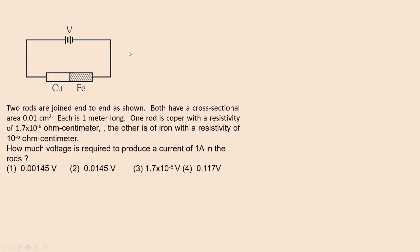So, what is the problem about? It says you have a voltage source with voltage value V. Two rods are connected like this. That means they are connected in series as shown in the picture. And what is the source voltage required if the current flowing through these two rods is 1 ampere?